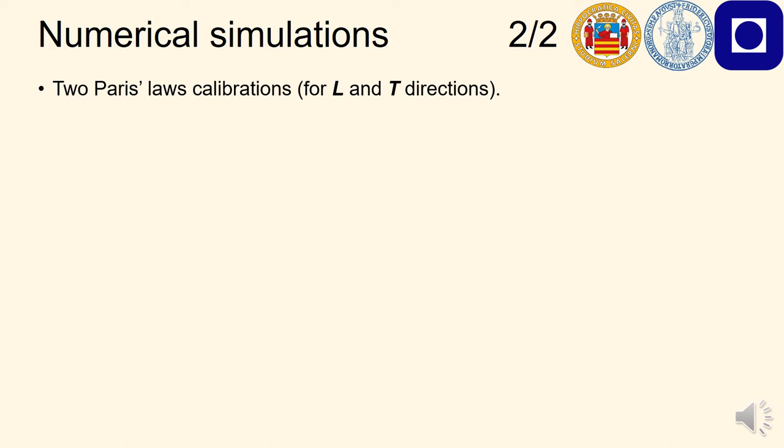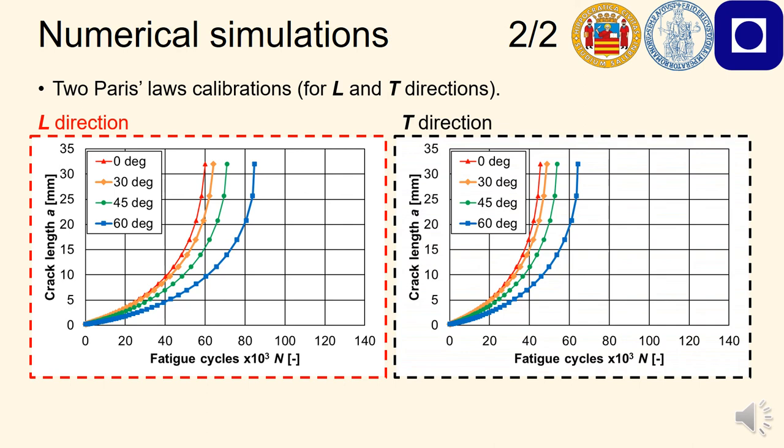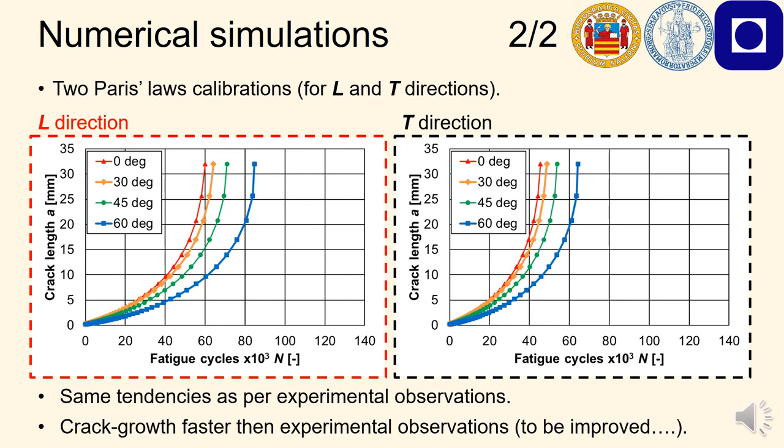Based on the previous simulations, two Paris laws were calibrated, one for each rolling direction. The predictions are shown in these charts, at left with reference to the L direction, at right for the T direction. We can see that we obtained the same trends as for the experimental observations, even though the predicted propagations are still faster than those. As said before, there is still room for some improvements in these simulations, and we are confident that a better agreement can be made.